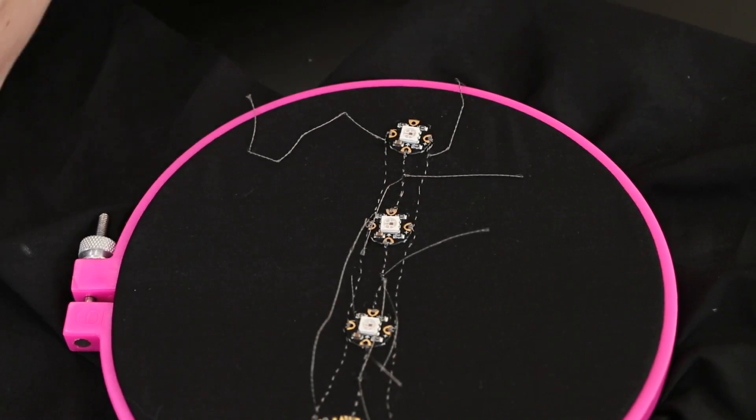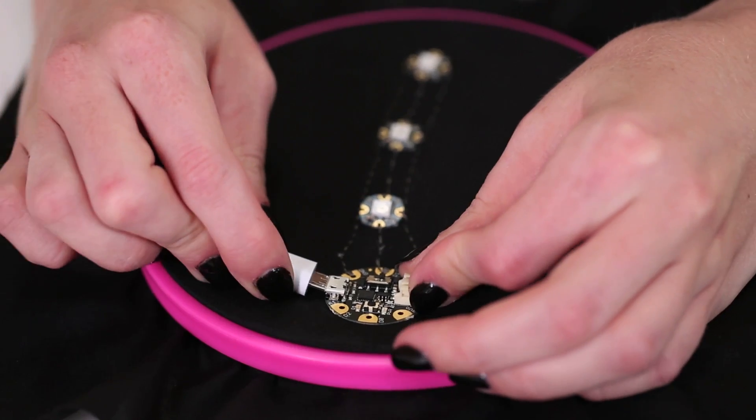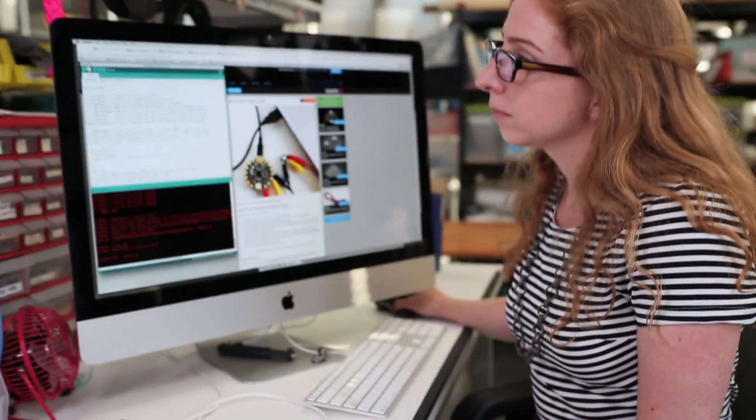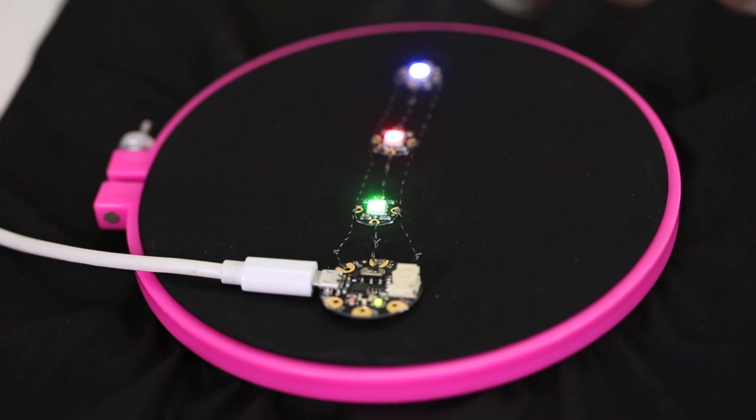Now it's time to test the circuit. Trim your thread tails and clean up your workspace, so there aren't any stray bits of thread hanging around. Plug in your microcontroller over USB, and then load the NeoPixel sample sketch using the Arduino software and watch your fabric circuit light up.